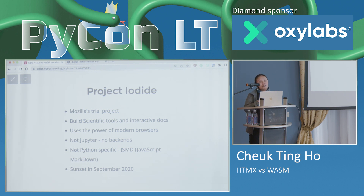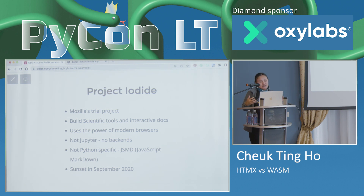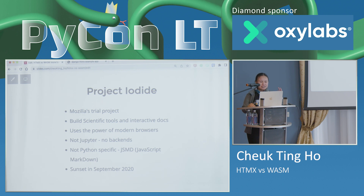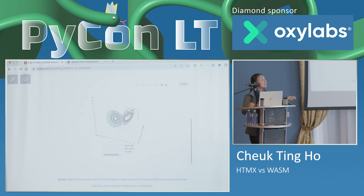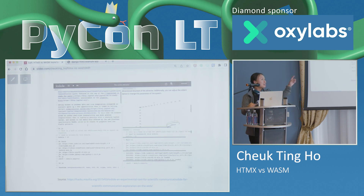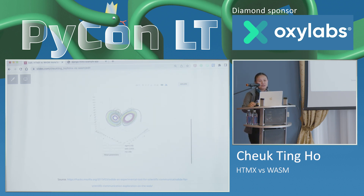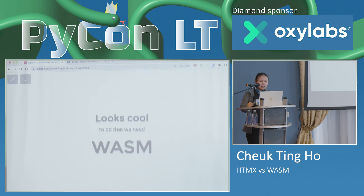The reason being that browsers can now do more than just showing a page with some funky GIF — remember the good 90s and 2000s. This project is not Python-specific. They invented this thing called JavaScript Markdown, which is a little bit similar to how you write code in Jupyter Notebook using the percent magic and all these things. Unfortunately, the project was sunset in September 2020 by Mozilla, so it's not supported anymore. That's why some of you may not have heard about it. This is how it looks — it looks a little bit like Bokeh, but very smooth because everything runs in the browser.